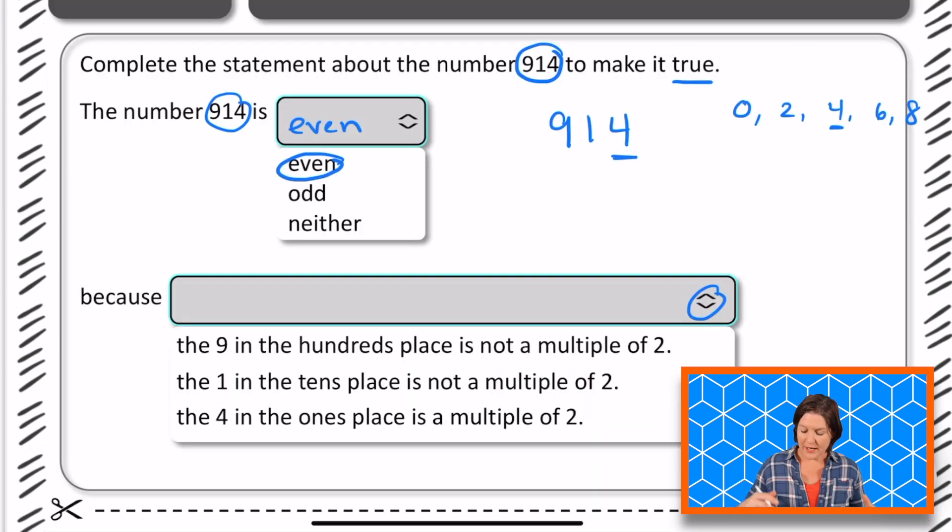Okay. Because, now let's pay attention to why. Is it because the 9 in the hundreds place is not a multiple of two? No, it's not about the hundreds place. It's about the ones place, right? So this one we can eliminate.